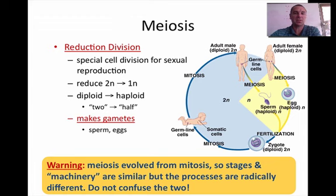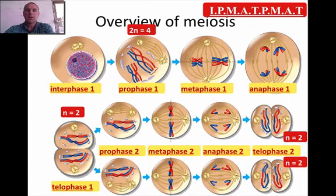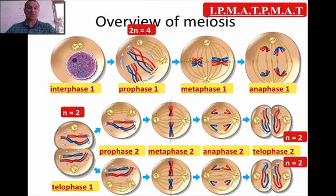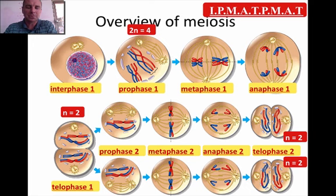A warning: meiosis evolved from mitosis, so the stages and machinery are very similar — they look almost the same — but the processes are really different, so don't get confused. If you remember, in mitosis we did IPPMAT: interphase, prophase, prometaphase, metaphase, anaphase, telophase. In meiosis we go IPMAT-PMAT. You're going to go through prophase twice, metaphase twice, anaphase twice, telophase twice. The same things happen close to what you remember in mitosis, at least in the second division.